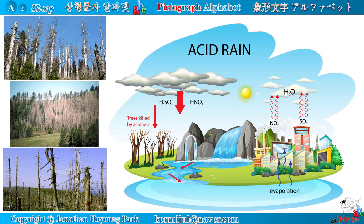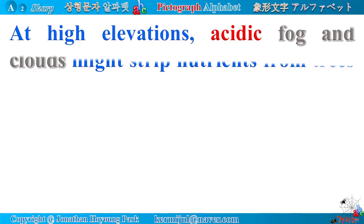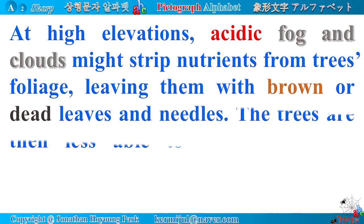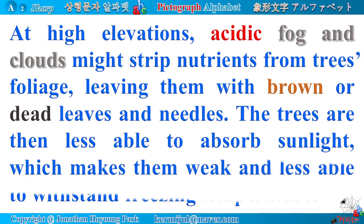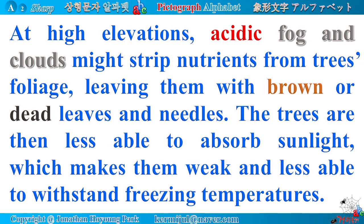Look at the trees devastated because of acid rain. The process of acid rain formation is as follows: First, water is evaporated into the air. Second, acidic gases such as nitrogen dioxide and sulfur dioxide are released into the atmosphere. Third, such acidic gases combine with water droplets from the clouds to form acids. Fourth, trees are killed by acid rain. At high elevations, acidic fog and clouds might strip nutrients from trees' foliage, leaving them with brown or dead leaves and needles. The trees are then less able to absorb sunlight, which makes them weak and less able to withstand freezing temperatures.